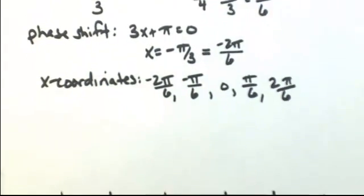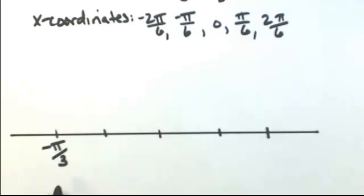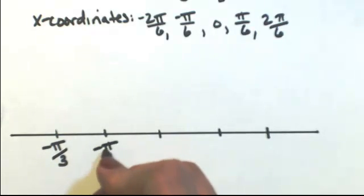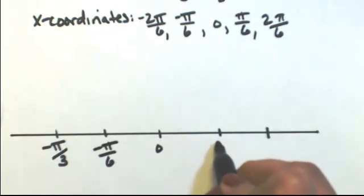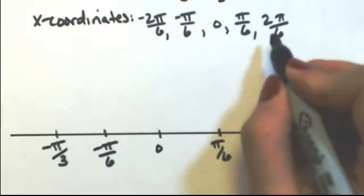Now all I need to do is just reduce that. So I have negative pi over 3, then negative pi over 6, 0, pi over 6, and then pi over 3.